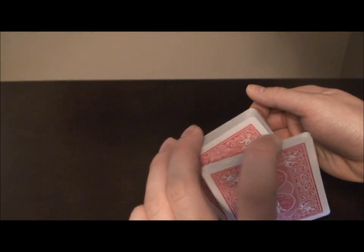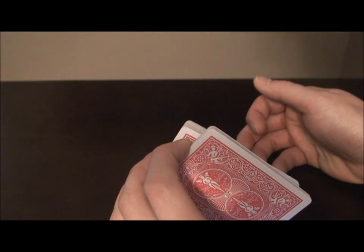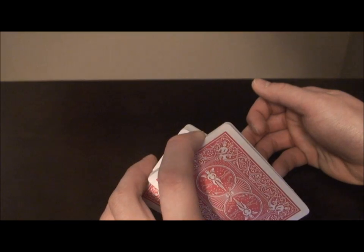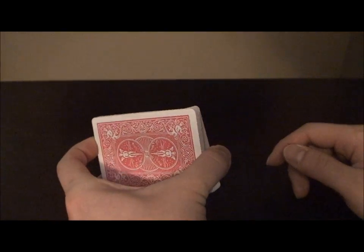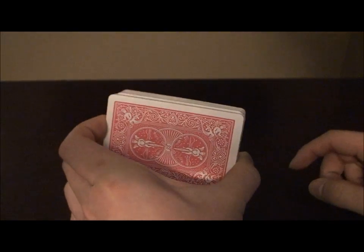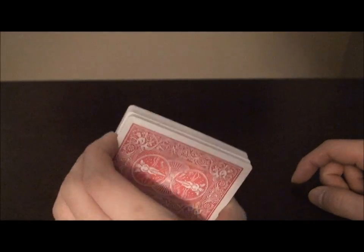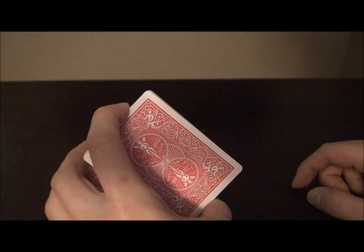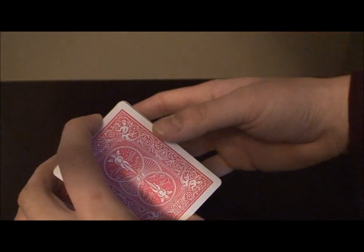All you're going to do is cut off about a fourth of the cards and you're going to move your index finger to the side, and the bottom packet is going to pivot off your thumb like so. So you cut off and this packet slides over your thumb, and now the other hand is going to come over.